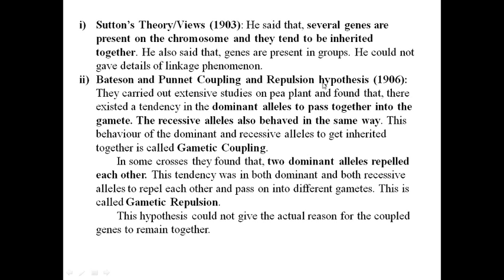Bateson and Punnett gave the coupling and repulsion hypothesis in 1906. They carried out extensive studies on the pea plant and found that dominant alleles tend to pass together into the gamete, and recessive alleles behave the same way. This behavior — dominant alleles in one gamete and recessive alleles together in another — is called coupling.